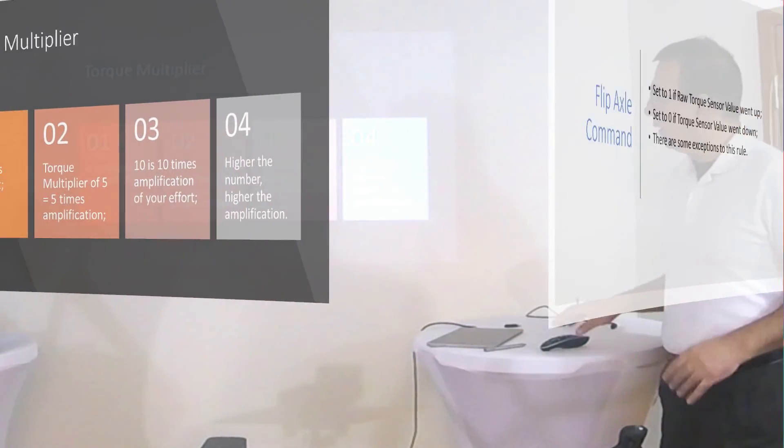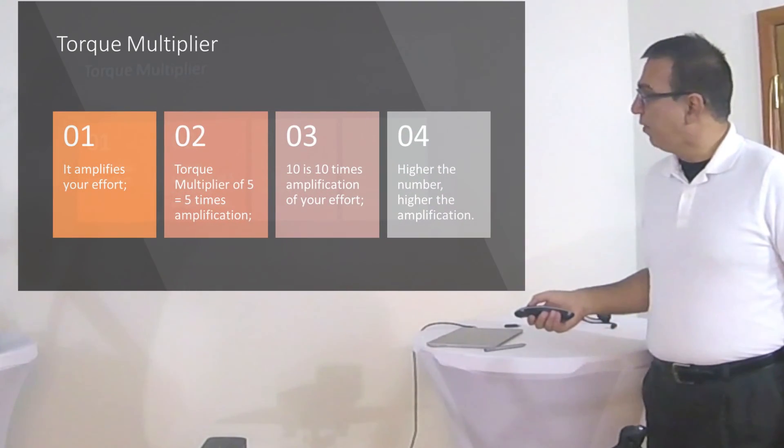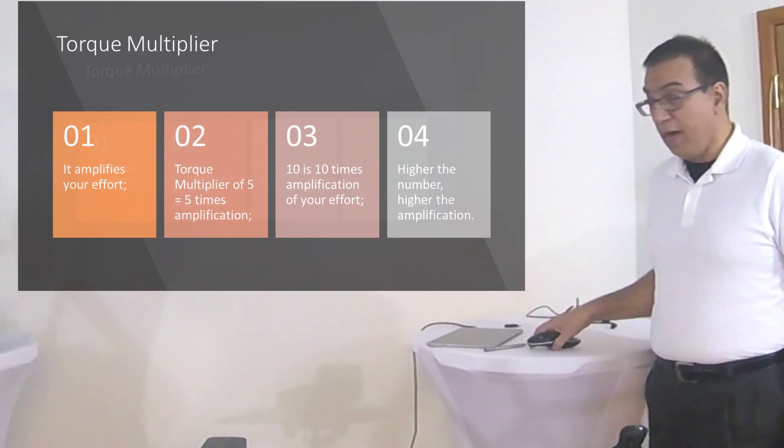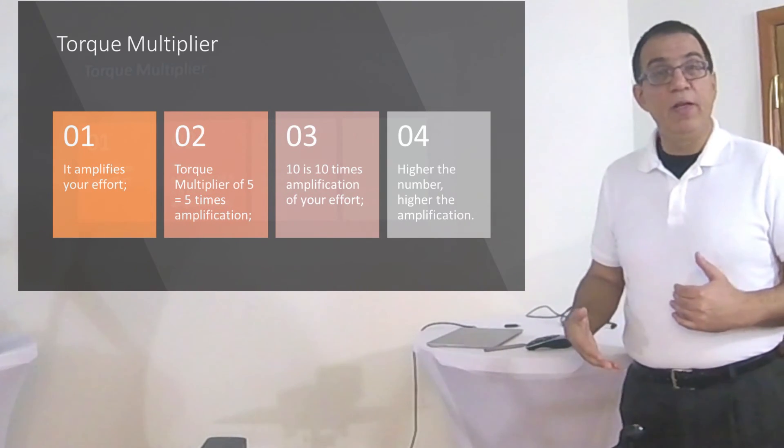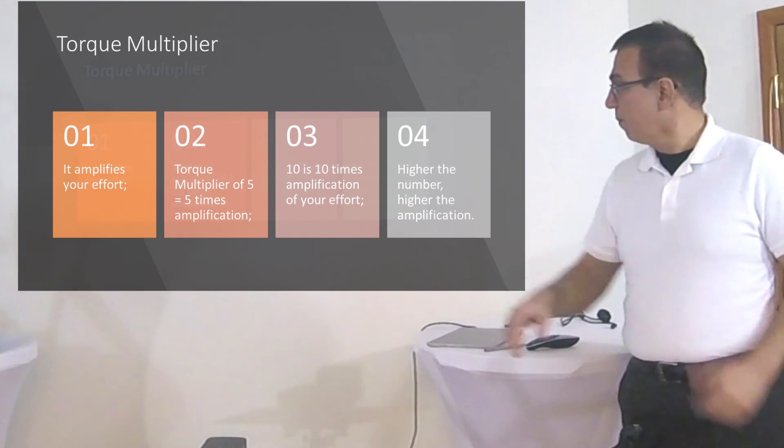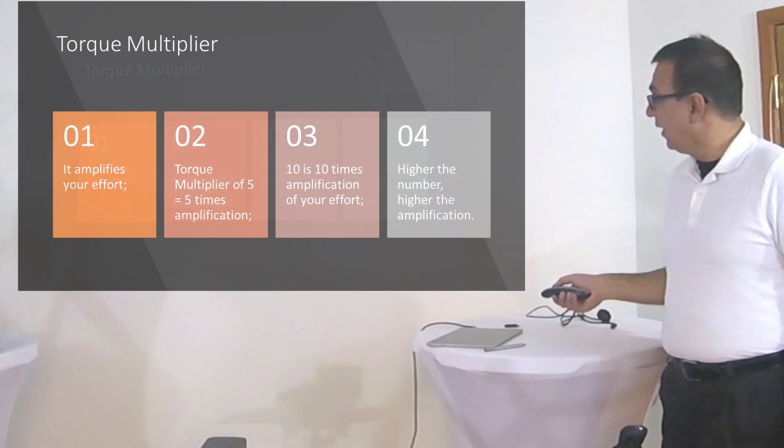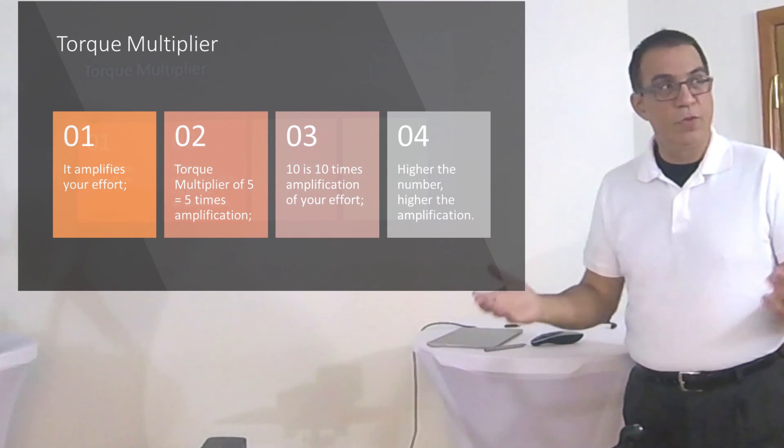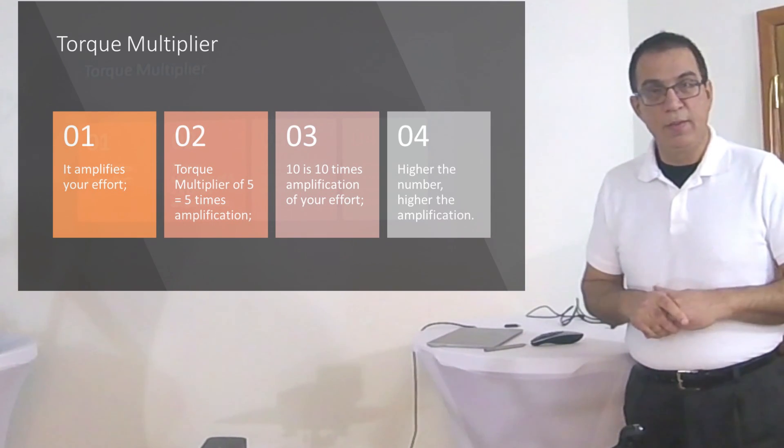The torque multiplier essentially amplifies your effort. If you have a torque multiplier of 5, it will amplify your effort 5 times. If it is 10, it amplifies your effort 10 times. Higher the number, higher the amplification. That is all we have to do for torque sensor calibration. Thank you.